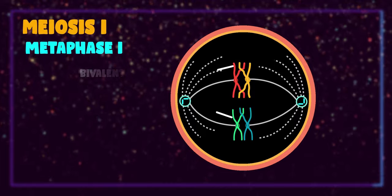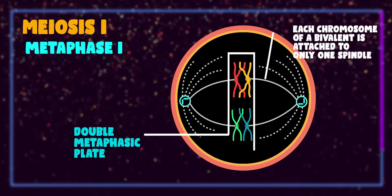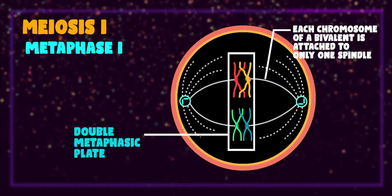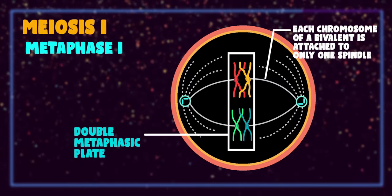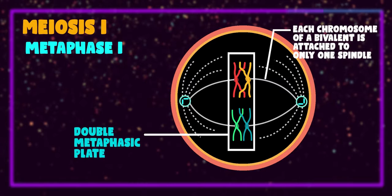In metaphase one, each chromosome of bivalent is attached to only one spindle, while in mitotic metaphase each chromosome is attached to spindle fibers from both the ends.